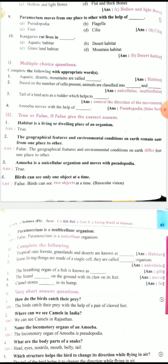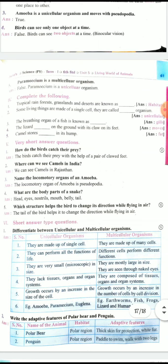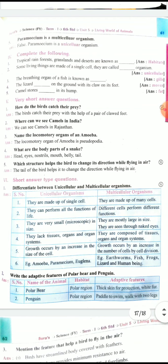Fourth one: Bats can see only one object at a time. False. Bats can see two objects at a time. Fifth one: Paramecium is a multicellular organism. False. Paramecium is a unicellular organism. Are you understood children? Yes.